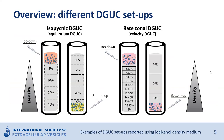Different setups for density gradient ultracentrifugation can be used, including rate zonal density gradient ultracentrifugation, also referred to as velocity density gradient ultracentrifugation, and isopycnic density gradient ultracentrifugation, also referred to as equilibrium density gradient ultracentrifugation. Both setups have their own characteristics and applications. Isopycnic density gradient ultracentrifugation is typically used to separate particles based upon equilibrium density, whereas rate zonal separates particles based upon size.